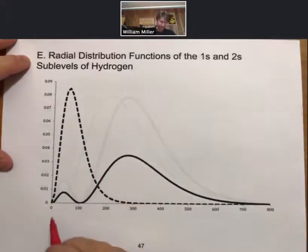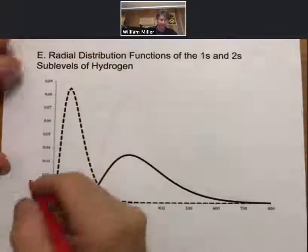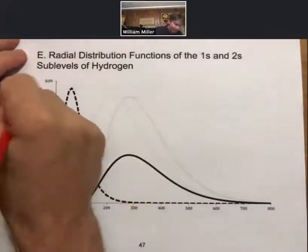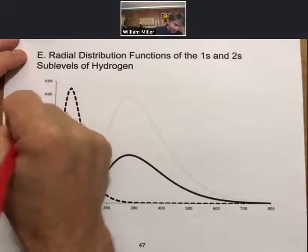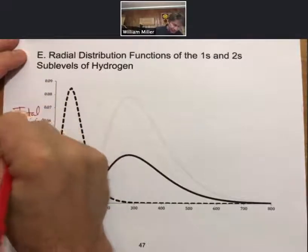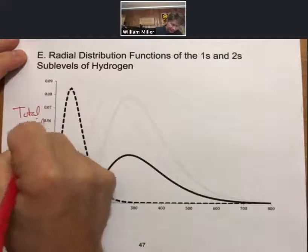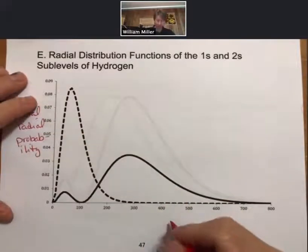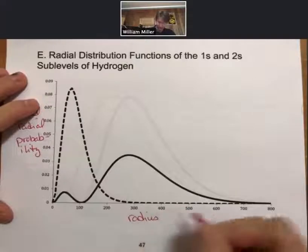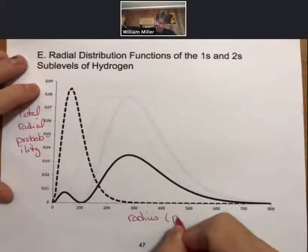On the y-axis we have total radial probability, and on the x-axis we have radius, and these are going to be in picometers.